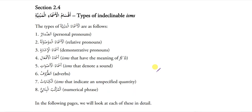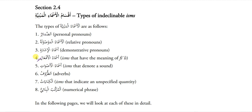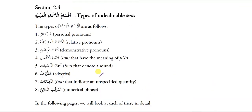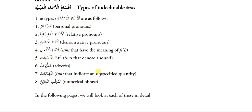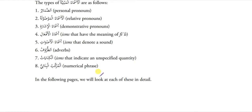Now Section 2.4: Aqsamul Asma'il Mabaniya. I have already explained Zameer, Asma'ul Mawsoola and Asma'ul Ishaara, so I will read these three at pace and explain the remaining five briefly. Asma'ul Zameer: Personal Pronoun. Asma'ul Mawsoola: Relative Pronoun. Asma'ul Ishaara: Demonstrative Pronoun. Asma'ul Afal: nouns that have the meaning of a Fail. Asma'ul Aswaat: nouns that denote a sound. Adverb Al-Khanaya: nouns indicating a specific quantity. Murakab Binayi: the numerical phrase.